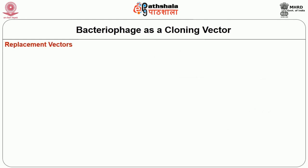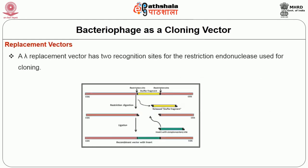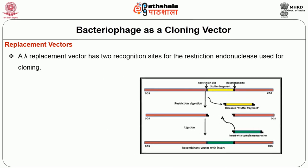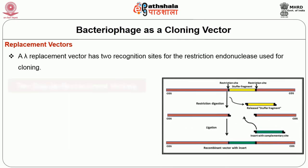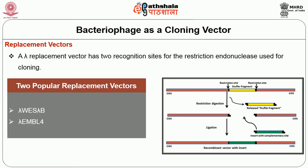What are replacement vectors? A lambda replacement vector has two recognition sites for the restriction endonucleases used for cloning. The two popular replacement vectors are lambda WS lambda B and lambda EMBL4.